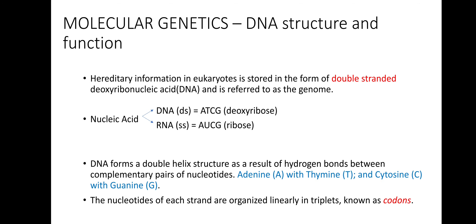Molecular Genetics: DNA Structure and Functions. Hereditary information in eukaryotes is stored in the form of double-stranded deoxyribonucleic acid, i.e., DNA, and is referred to as the genome. Nucleic acid contains DNA and RNA. DNA is double-stranded, composed of deoxyribose, with bases A, T, C, G. RNA is single-stranded, composed of ribose, with bases A, U, C, G.